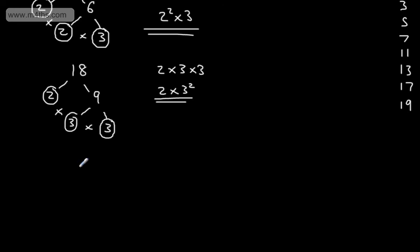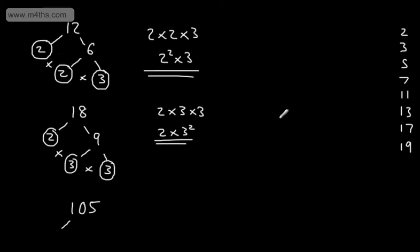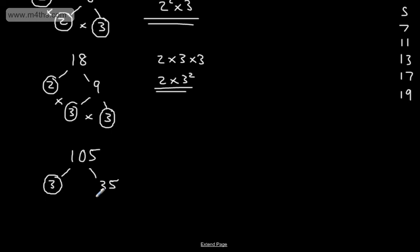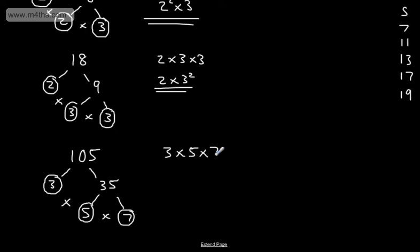Let's look at another one — 105. Can I divide this by 2? No. So I divide it by the next prime number, 3. That leaves me 35. Can I divide 35 by 2? No. Can I divide it by 3? No. Can I divide it by 5? Yes. So we have 5, and that leaves me 7. 35 ÷ 5 is 7. 7 is a prime number, so we stop. As a product of prime factors, we have 3 × 5 × 7, which is 105 expressed as a product of prime factors.